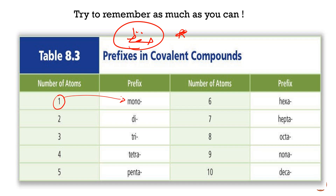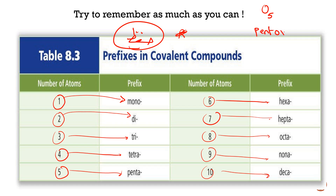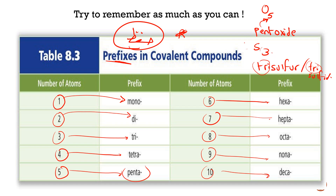If you have one atom, add 'mono' before the name. Two atoms: add 'di.' Three atoms: 'tri.' Four: 'tetra.' Five: 'penta.' Six: 'hexa.' Seven: 'hepta.' Eight: 'octa.' Nine: 'nona.' Ten: 'deca.' So if you have five oxygens, you say 'pentoxide.' If you have three sulfur, it will be 'trisulfide' for example. These prefixes show the number of atoms in the compound.